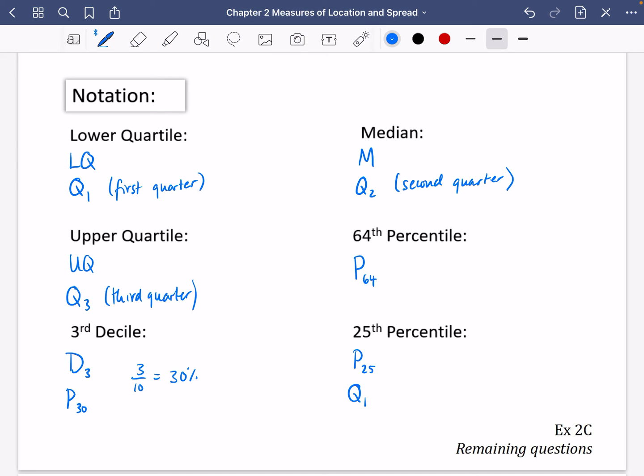I guess there's some other ways I could write these. For this first one, I could say it's P₂₅. This one could be P₅₀, could even be D₅ to say it's the fifth decile. The upper quartile would be the 75th percentile, but again it's not going to be very useful for us to use that.